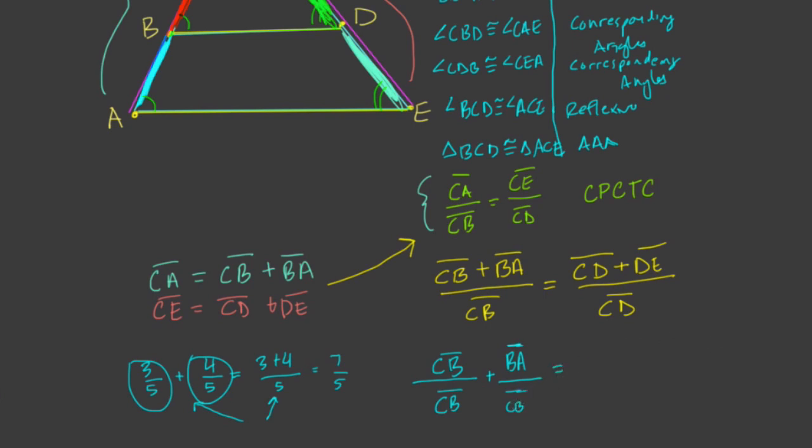And the same reasoning on the right-hand side here. On the right-hand side, we have CD over CD, plus DE over CD.